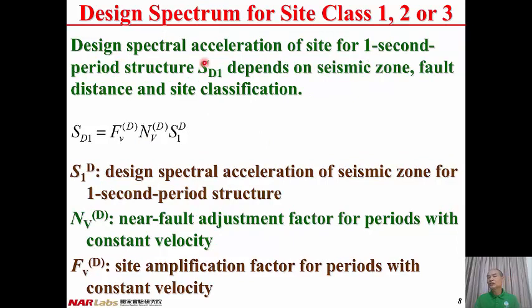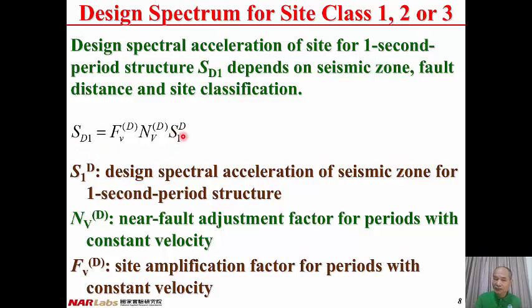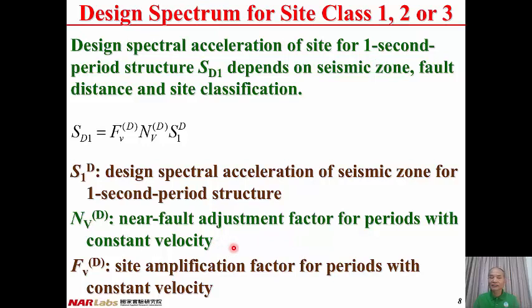Similarly, the design spectral acceleration of site for one-second period structure, SD1, also depends on three factors: location (seismic zone), fault distance, and site classification. Therefore, SD1 is equal to the product of S1D (design spectral acceleration of seismic zone for one-second period structure), multiplied by NVD (the near fault adjustment factor for periods with constant spectral velocity), and then multiplied by FVD (the site amplification factor for periods with constant spectral velocity).